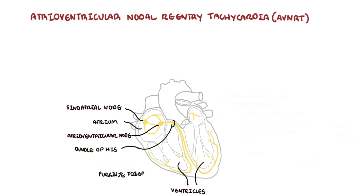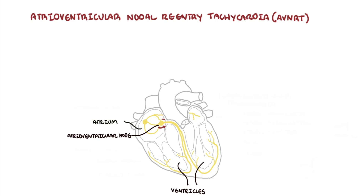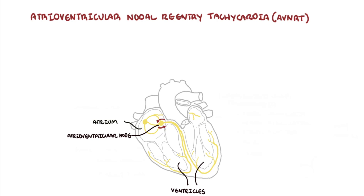The impulse travels rapidly through the bundle branches and Purkinje fibers, resulting in ventricular contraction. Atrioventricular nodal re-entry tachycardia, as the name suggests, is a tachyarrhythmia caused by a re-entry circuit in the atrioventricular node.